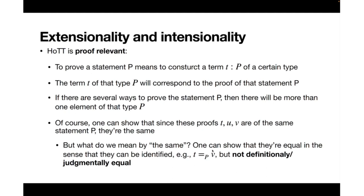The identity type has three arguments: the base type in which the situation takes place — in this case P — and two terms, for example T and V. This whole thing is also a type. Importantly, we say they form an identity type, but they are not necessarily judgmentally equal. Judgmental equality is on a syntactical level — it is more like a usual definitional equality.